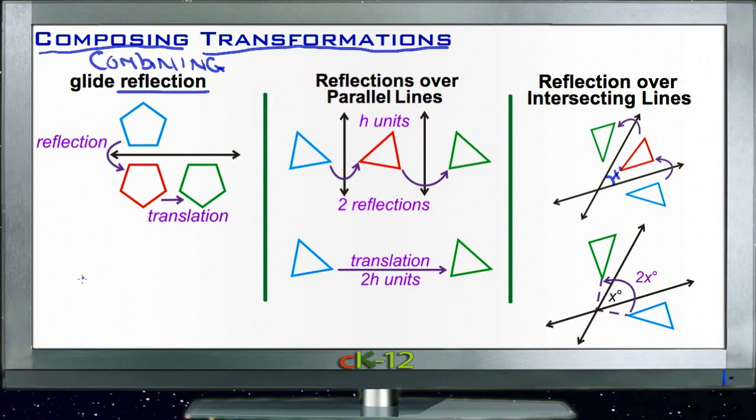So if I have a little triangle here and I'm going to reflect it over a vertical line like this, I'm going to take that image and flip it over the line.